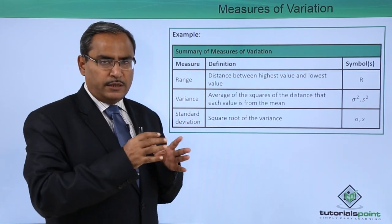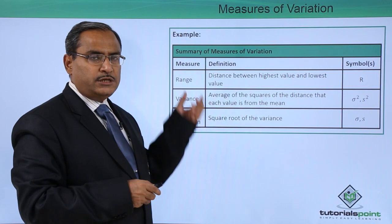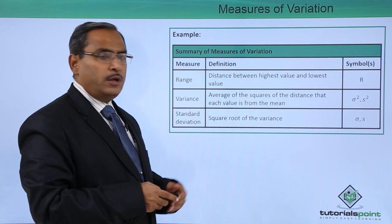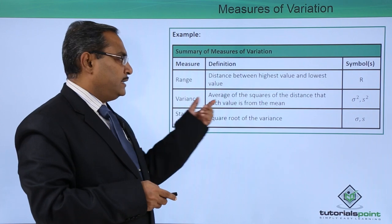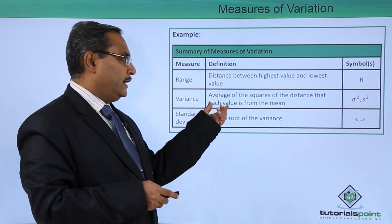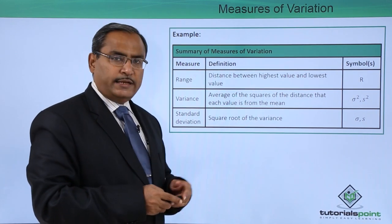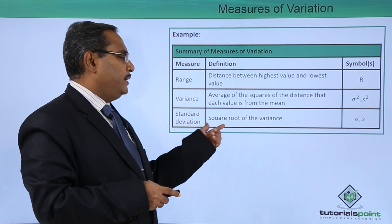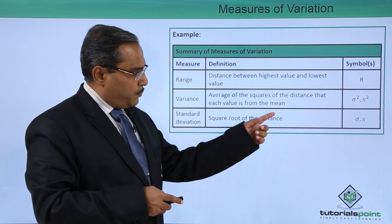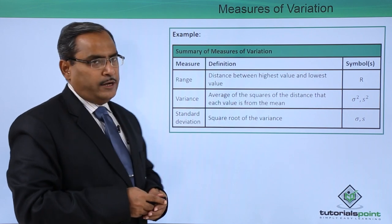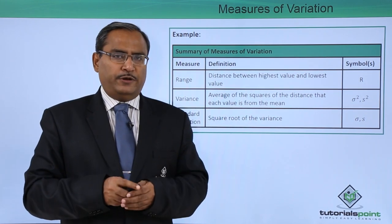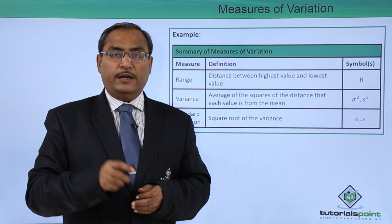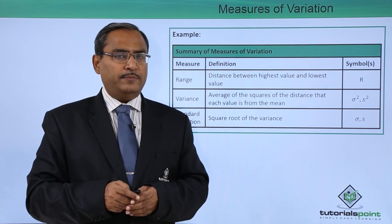As a summary: range, discussed in the previous video, is the distance between the highest and lowest value, denoted by capital R. Variance is the average of the squares of the distances from the mean — sigma squared for population, s squared for sample. Standard deviation is the square root of the variance — sigma for population, small s for sample.